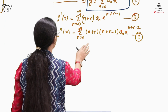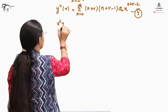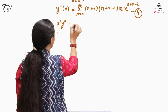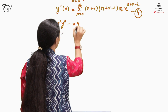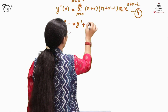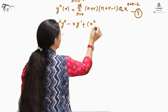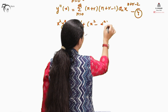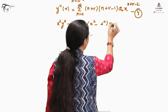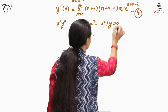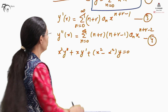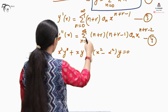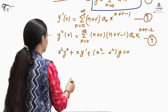The given differential equation is: x²·y'' - x·y' + (x² - α²)y = 0. We need to substitute the expressions for y, y', and y'' into this equation.